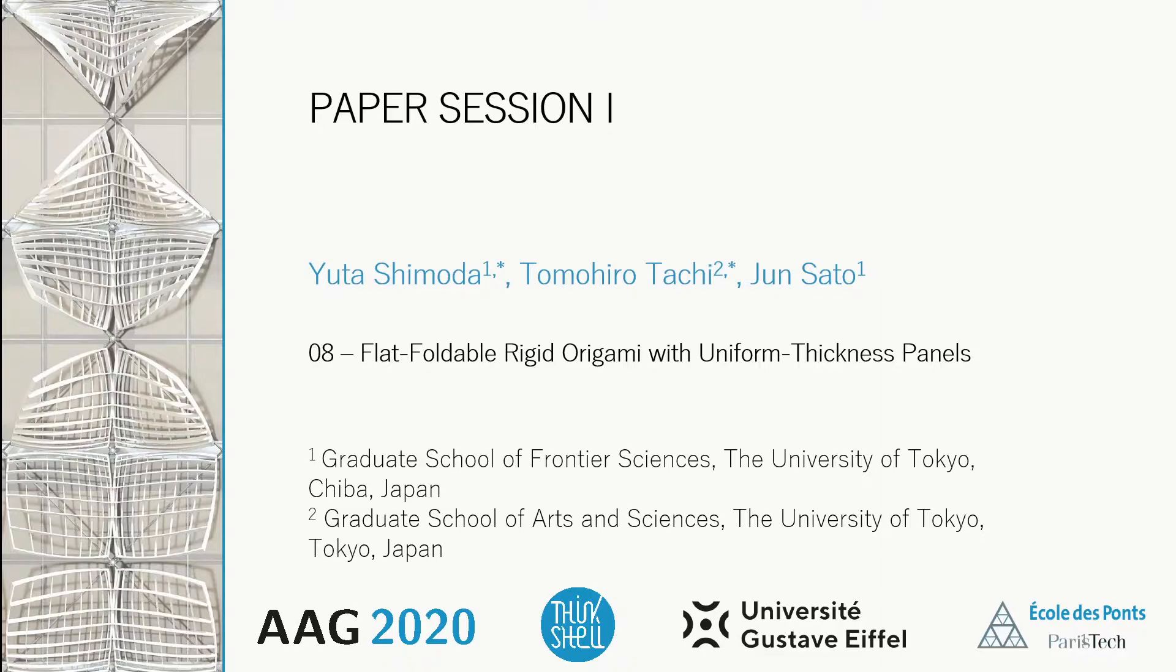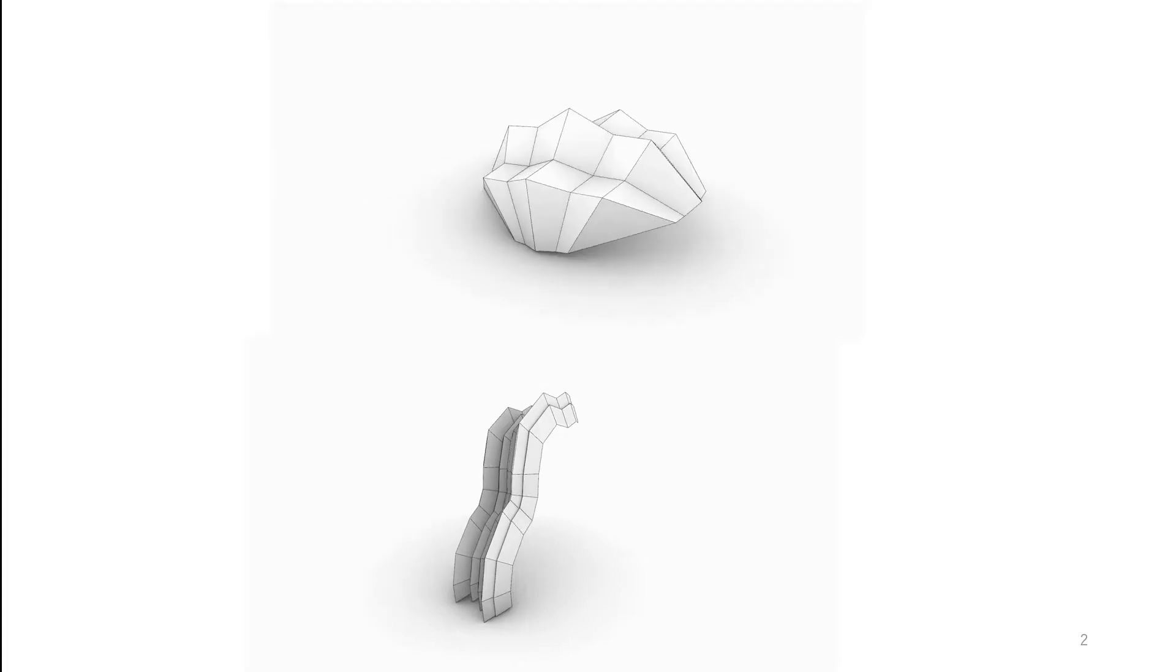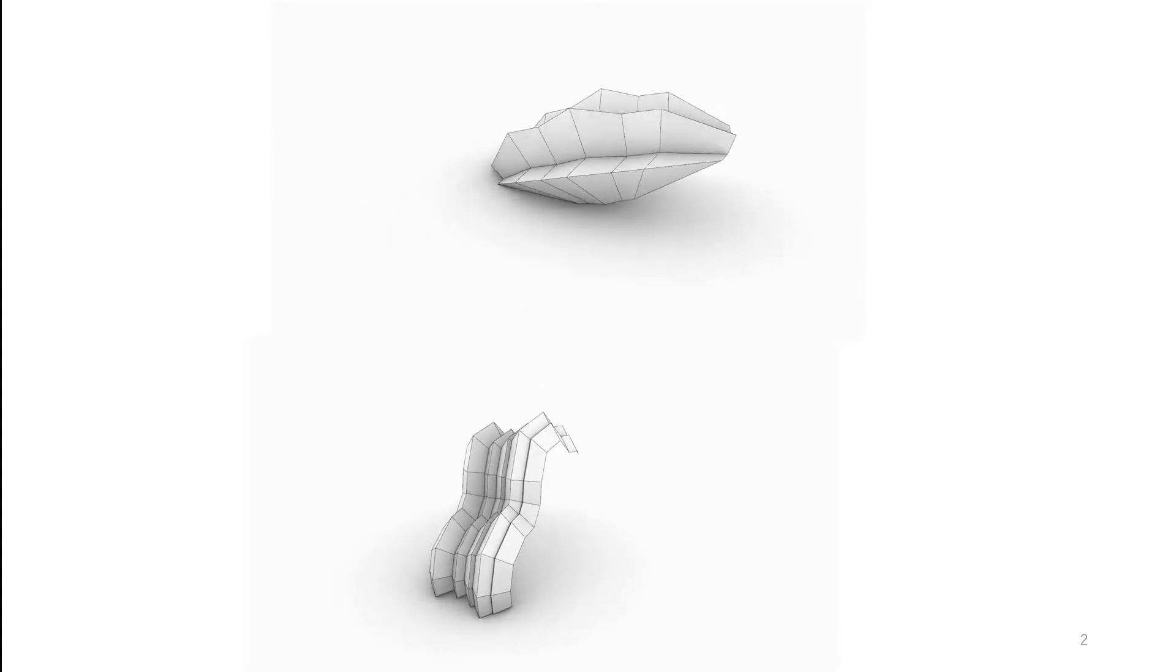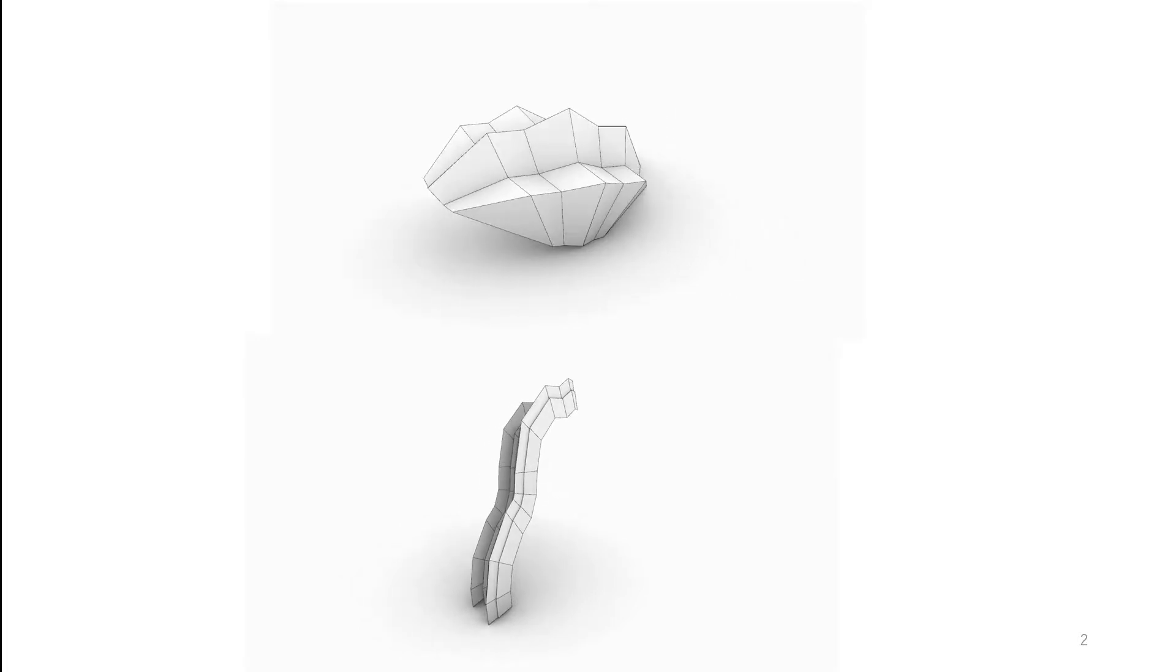In this paper, we present a novel design method of rigidly foldable origami composed of panels with uniform thicknesses. Our design is based on quadrilateral transformable mesh forming a family of corrugated surface that folds flat.